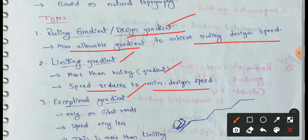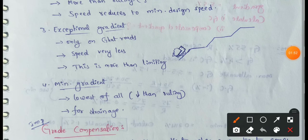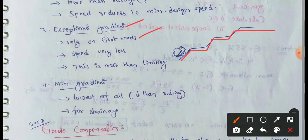Next, exceptional gradient. Exceptional gradient is only on guard roads. On guard roads, speed is very less — very low. This is more than limiting gradient. The exceptional gradient value is greater than the limiting gradient value.